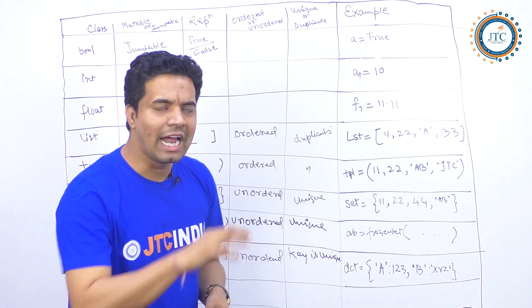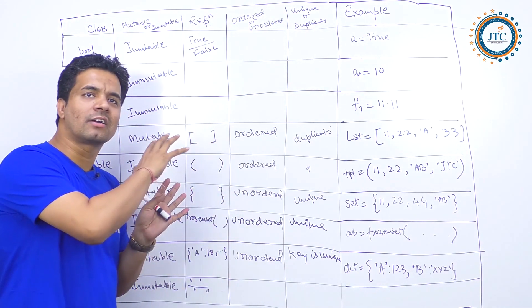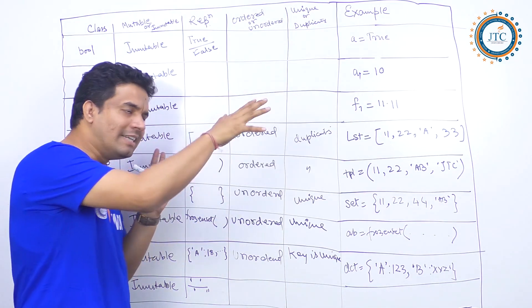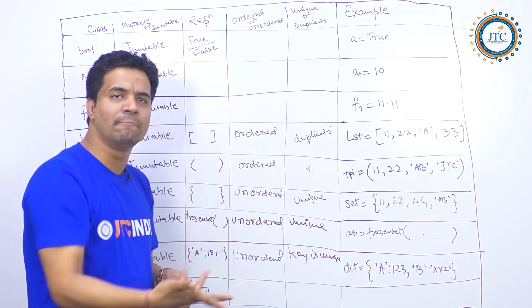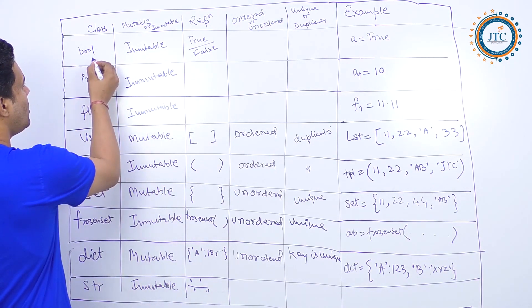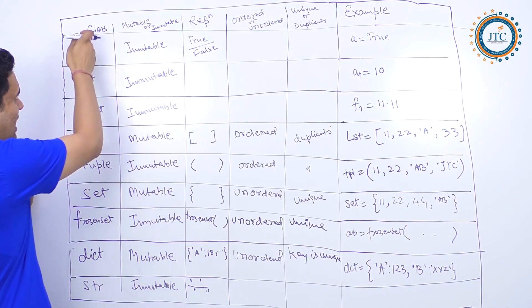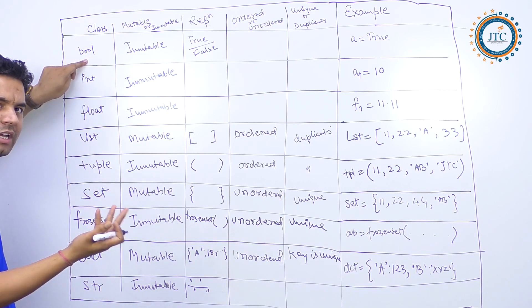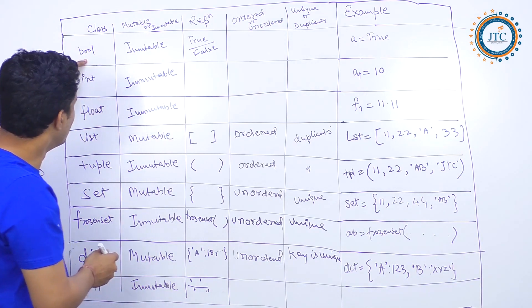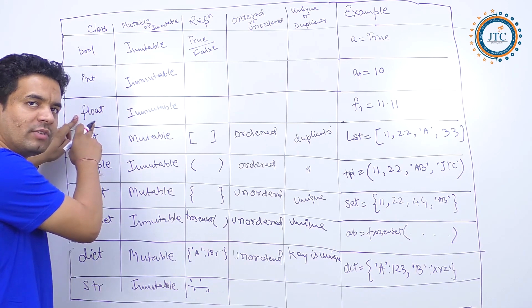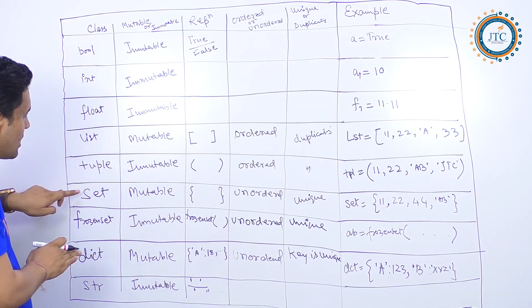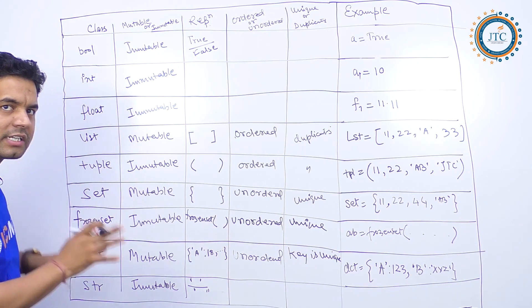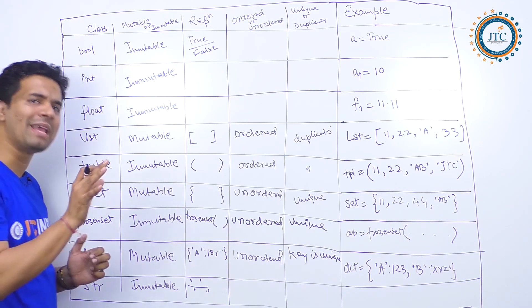In this one video I'll be explaining the complete data types of Python with examples. The data types are: bool (boolean), integer, float, list, tuple, set, frozen set, dictionary, and string — these are all the basic data types available in Python.